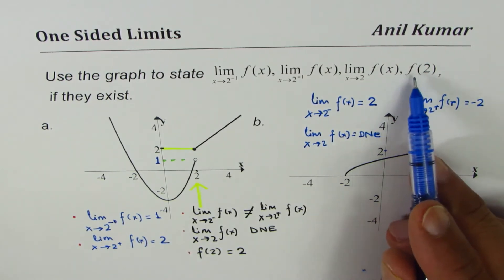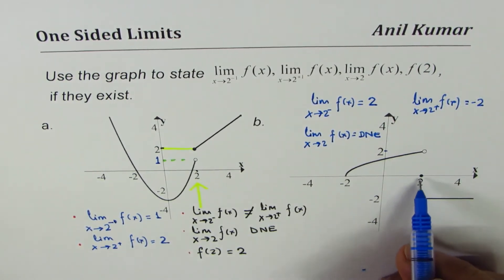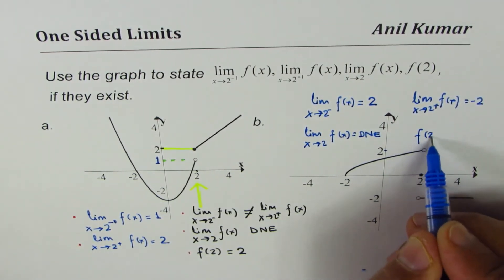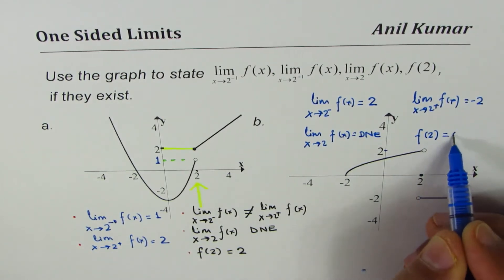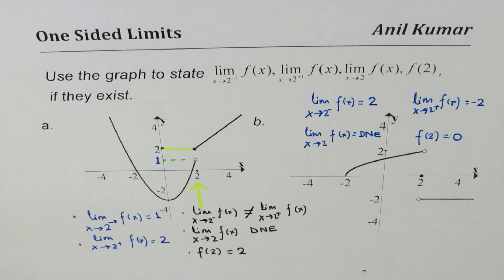What is the value of the function at 2? You can see that there is a filled-in dot here, and so we can write f of 2 equals 0. That is, in a nutshell, the method of reading graphs for limits and the value of the function.